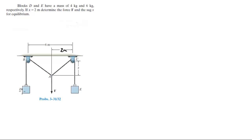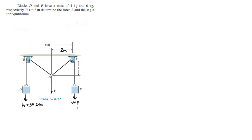You know that D has a weight of 4 kg times the acceleration of gravity, which is 9.81, so the weight comes out to be 39.24 N. And the weight of E is 6 kg times 9.81, which comes out to be 58.86 N.